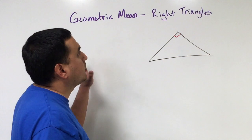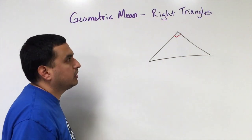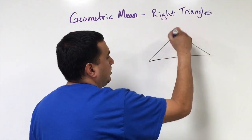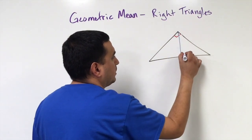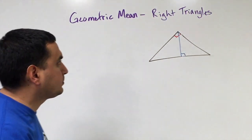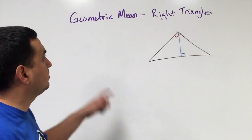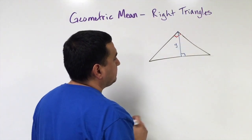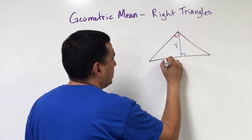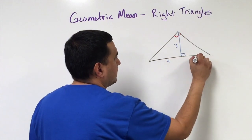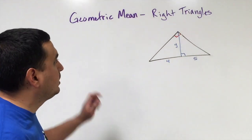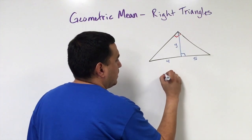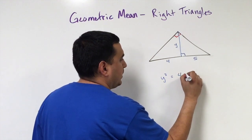We can use geometric means to solve problems with right triangles. If I take the opposite vertex and go straight down to the hypotenuse at a 90-degree angle, it splits the triangle. Using geometric mean, if I let the height be y and the two segments be 4 and 5, I can set up y squared equal to 4 times 5.